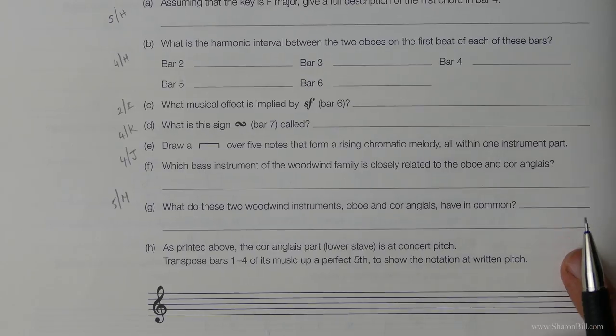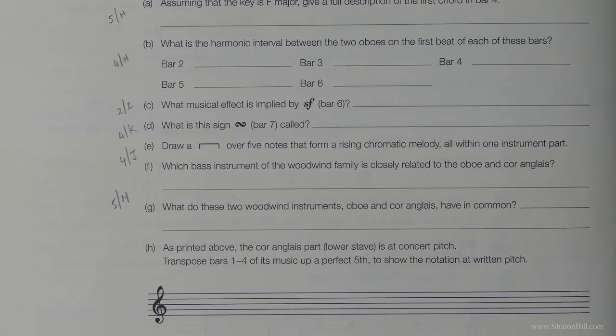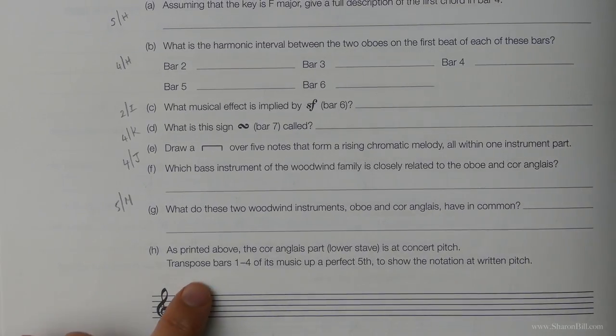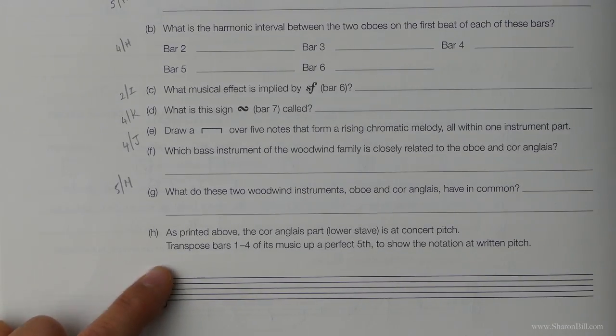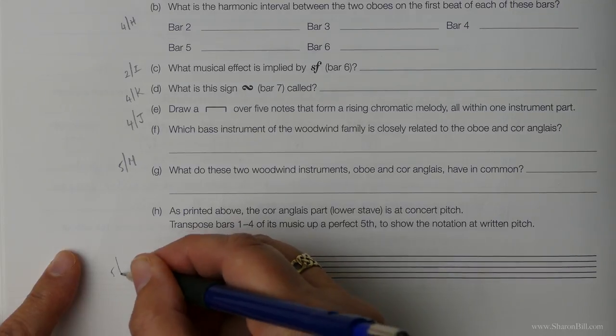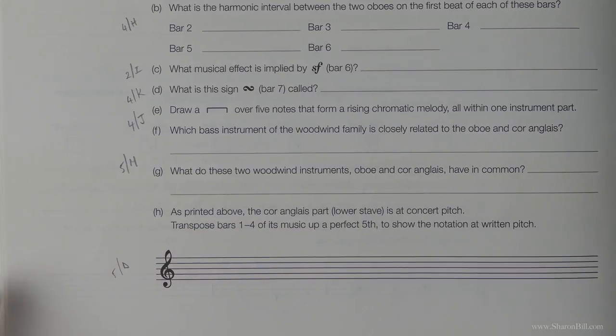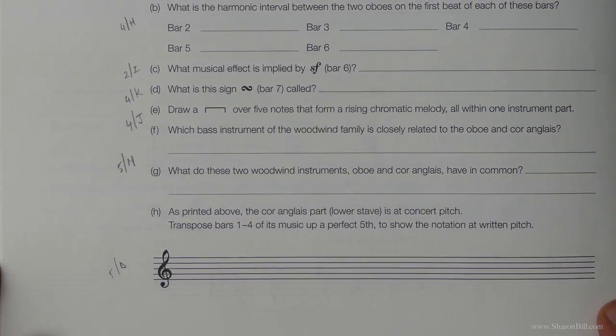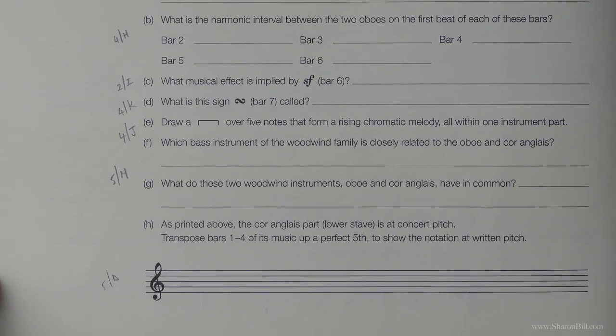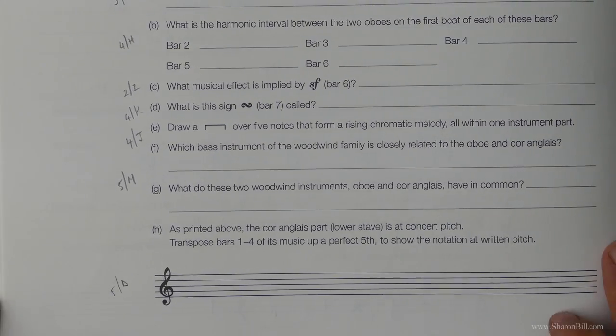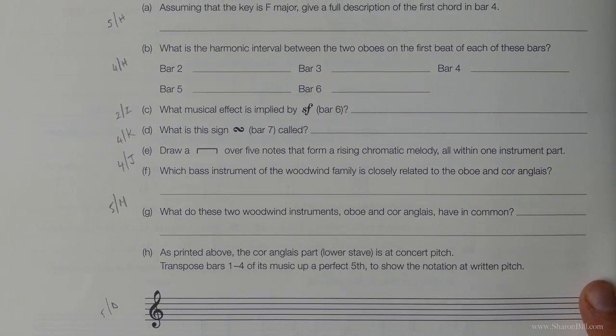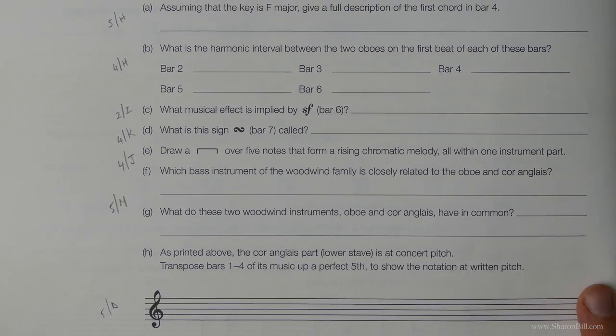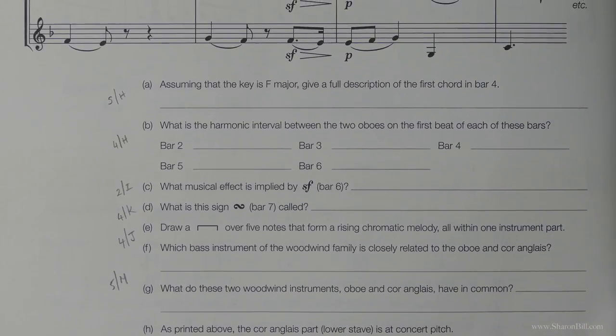And so the last question asks us to transpose bars 1 to 4 up a perfect 5th. And we first do this in grade 5 section D. And so that's where you need to find those answers if you're not quite confident to just go for it straight away. So I suggest that you just dip out of the video. Have a crack at those. And then if you come back into the video we'll go through these questions together.